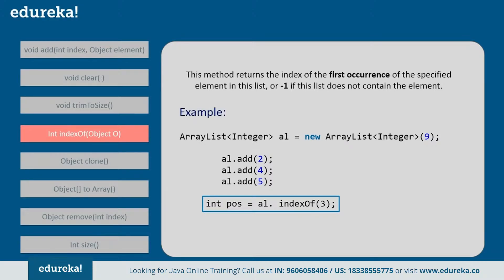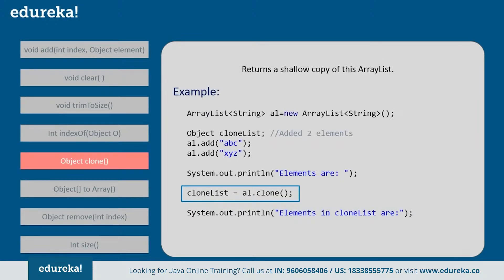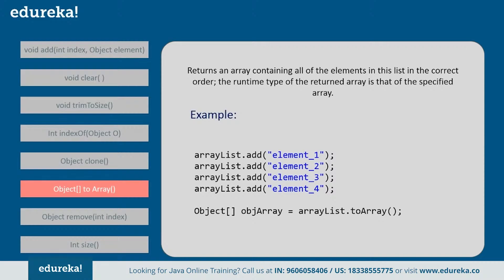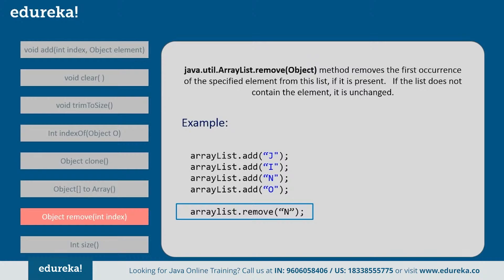Next, clone — this method is used to return a copy of the ArrayList. On calling this method, it clones the entire ArrayList. So for example, if you're adding two elements in the array and you're cloning the entire thing, after cloning it will return the whole element present in the ArrayList. Next, toArray — this method is used to return an array containing all the elements in the list in the current order. If you have all the elements in the list, it will return all the elements in the correct order.